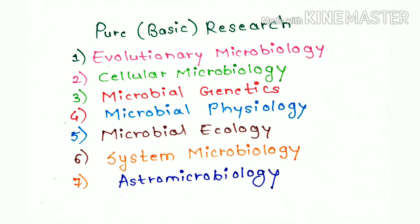The fifth is microbial ecology, here in this field we are concerned about the ecology. And the sixth is systemic microbiology, that is mathematical and computational modeling of activities of microbial systems. And the seventh is astromicrobiology, where we talked about the origin of life on the earth and research for the extraterrestrial life.